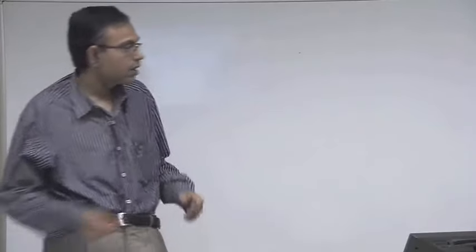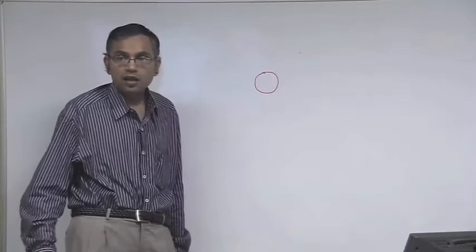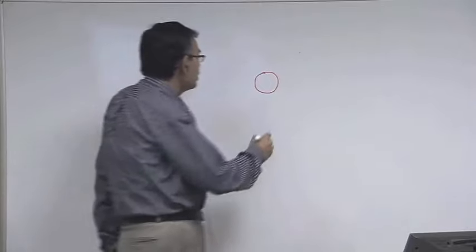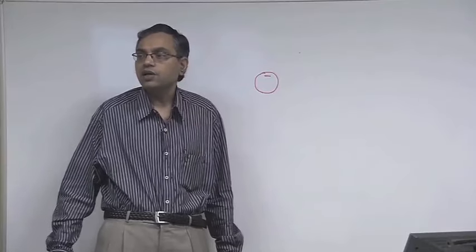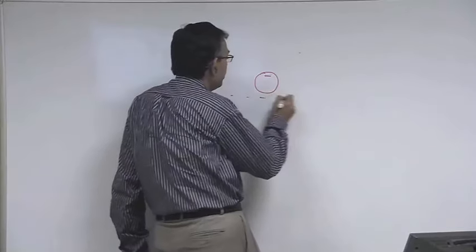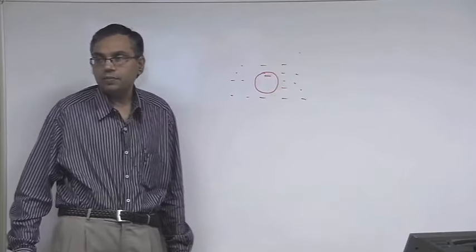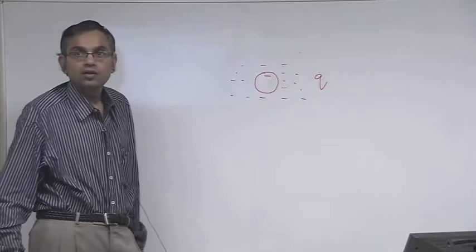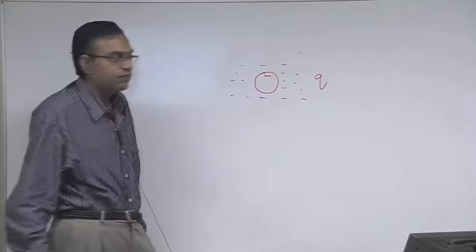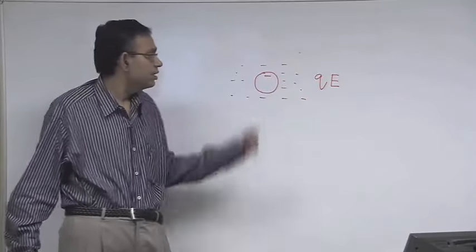Let us consider an example of a charged species. This charged species is moving — say this species has a negative charge — and it is moving under the action of an electric field. So, let us say there is a fluid medium and an electric field is applied. If Q is the charge and E is the electric field, then Q times E is the force acting on this charged species.